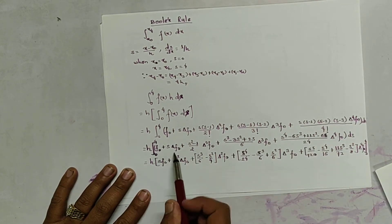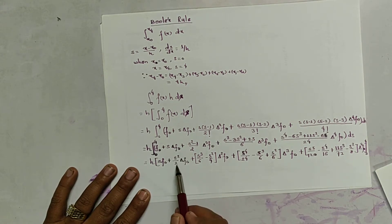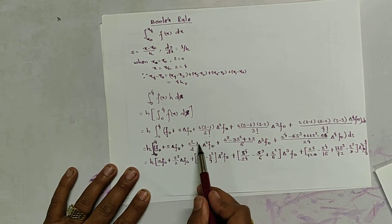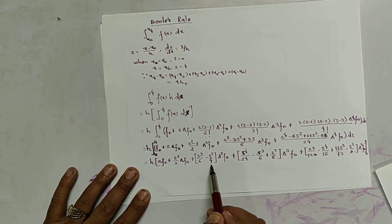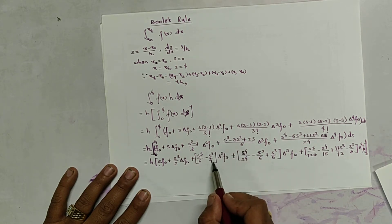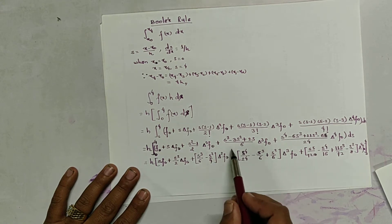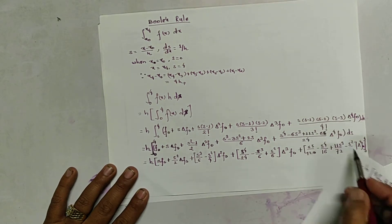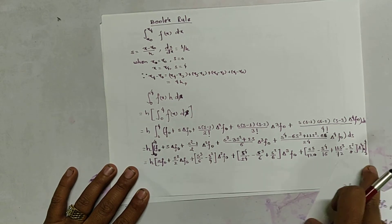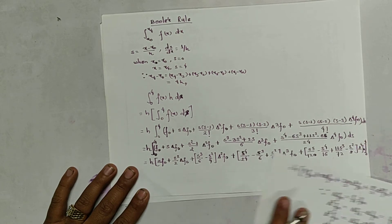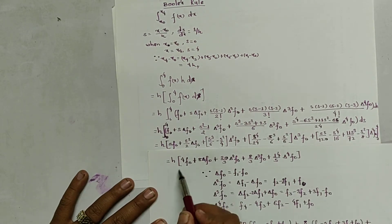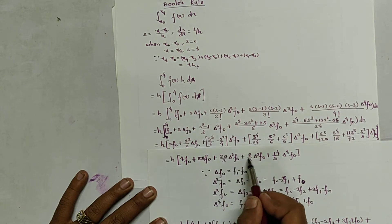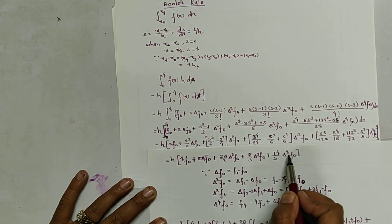Now we integrate it. f0 becomes s·f0, the next term becomes s²/2·Δf0, the next gives s²/2 and s³/6 terms, and further terms include s²/4 and so on. These are evaluated from 0 to 4 — when we substitute 0, all terms become 0, so we only evaluate at s=4. We get: h times [4f0 plus 8Δf0 plus (20/3)Δ²f0 plus (8/3)Δ³f0 plus (14/45 or 14.5)Δ⁴f0].